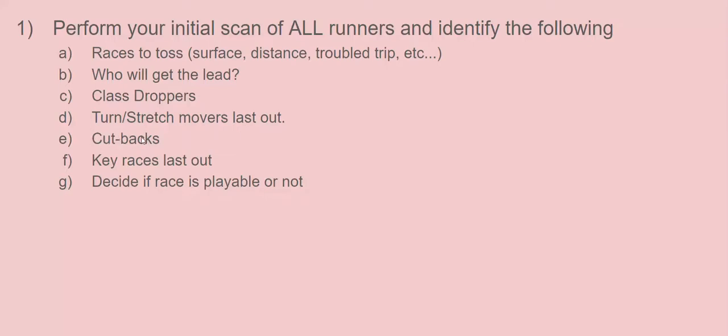Identify horses that are cutting back in distance from two turns to one. Key races last out: which horses are coming out of key races, meaning at least two of the three top finishers on the right-hand side are in italics. If they're italicized, you can label that race a key race. Then you're also going to decide if the race is playable or not. If there are too many intangibles—such as horses that have only run three or four times, they haven't been on today's surface, and if it's a maiden race you have two or three first-time starters in there, a couple of them coming from good trainers—you just move on, move on to another race. You don't have to bet every race you see.